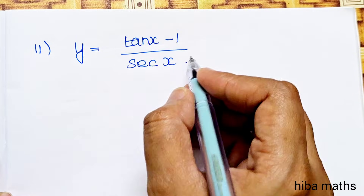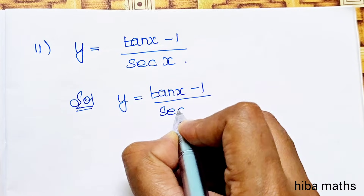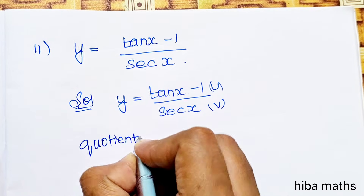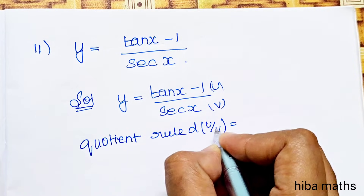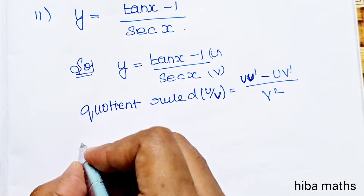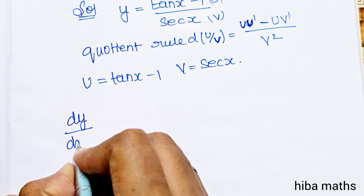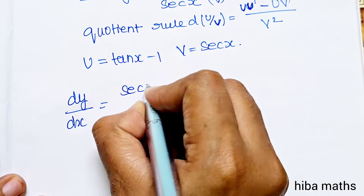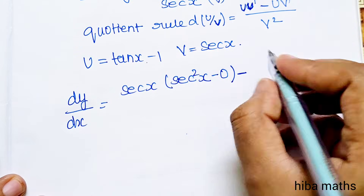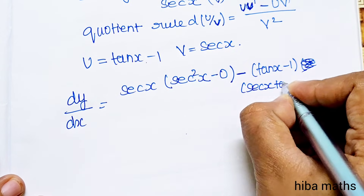Now question 11: y is equal to (tan x minus 1) divided by sec x. Applying the quotient rule: d/dx(u/v) equals (v·u' minus u·v') divided by v square. Here u is equal to tan x minus 1 and v is equal to sec x. So dy/dx equals sec x times (differentiate tan x gives sec²x, minus differentiate 1 gives 0), minus (tan x minus 1) times the derivative of sec x which is sec x·tan x.